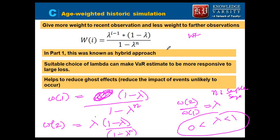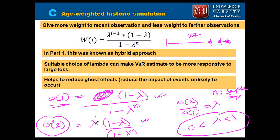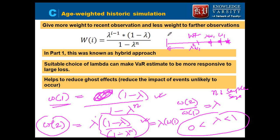If we are trying to measure the VaR on this day, for the past day I will apply this much weight; one more day before this I will apply this. So this weight will be more than this because W2 is equal to lambda into W1, and since lambda is less than 1, this is actually going exponentially. So you have W1, this is lambda times W1, this is lambda squared times W1 - like that you will go back till n data. For n you will have lambda to the power n minus 1 times (1 minus lambda). So that is how you get this weighting.